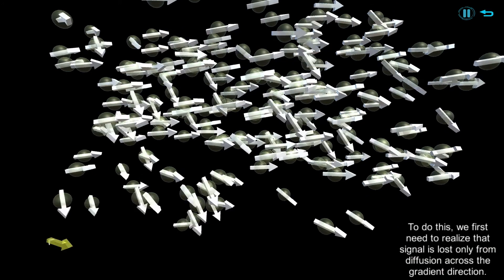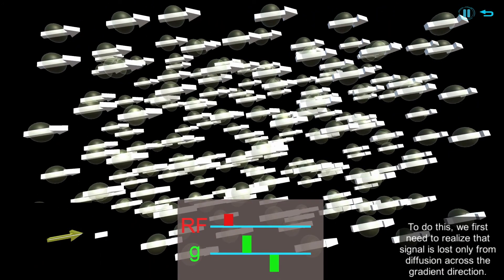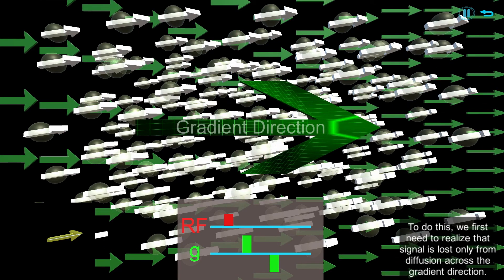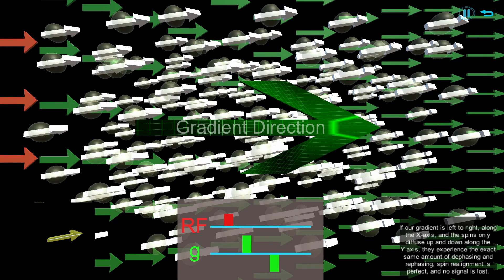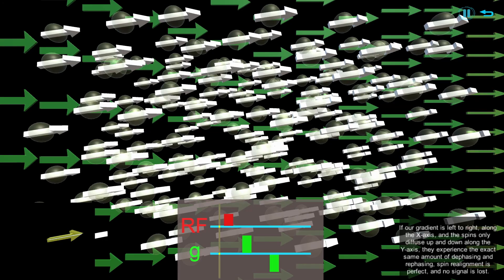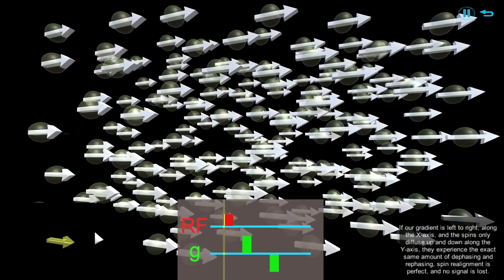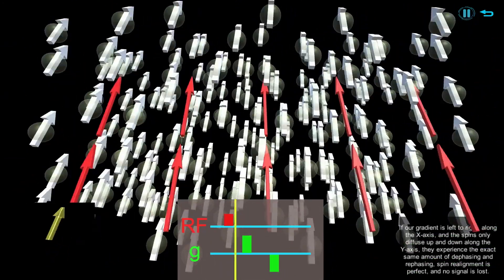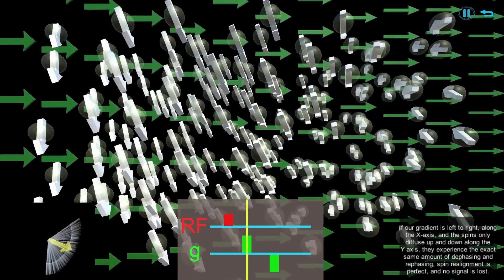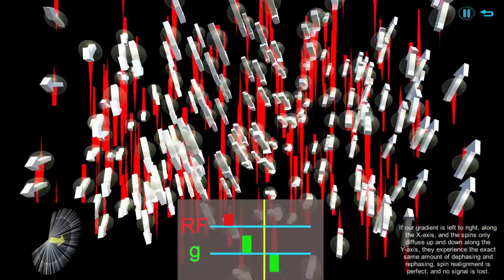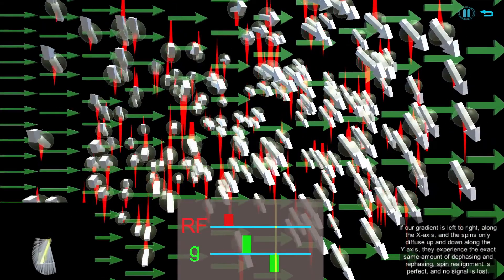To do this, we first need to realize that signal is lost only from diffusion across the gradient direction. If our gradient is left to right along the x-axis, and the spins only diffuse up and down along the y-axis, they experience the exact same amount of dephasing and rephasing. Spin realignment is perfect, and no signal is lost.